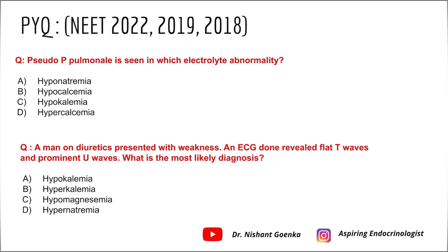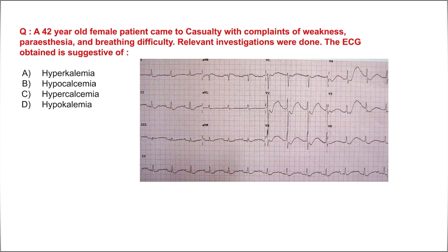The first question asked is: pseudo P pulmonale is seen in which electrolyte abnormality? Second: a man on diuretics presented with weakness and ECG revealed flat T waves and prominent U waves — what is the most likely diagnosis? Third: a 42-year-old female came to casualty with weakness, paresthesia, and bleeding difficulty — the ECG obtained is suggestive of which electrolyte abnormality?